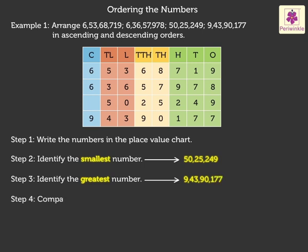Step 4. Compare the remaining numbers. As the first digit in numbers 6 crore 53,68,719 and 6 crore 36,57,978 is the same, let us compare the digits in the 10 lakhs place. 5 is greater than 3. Therefore, 6 crore 53,68,719 is greater than 6 crore 36,57,978.